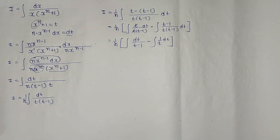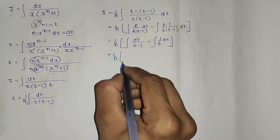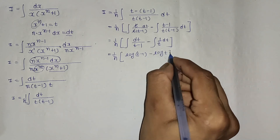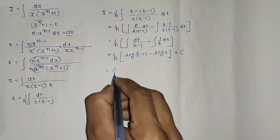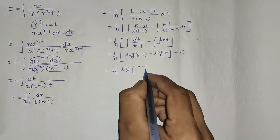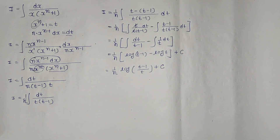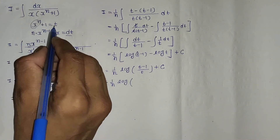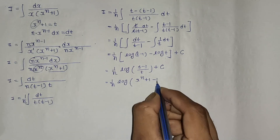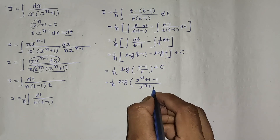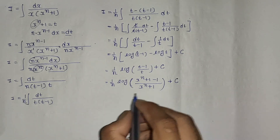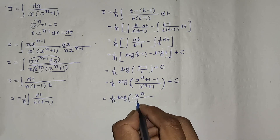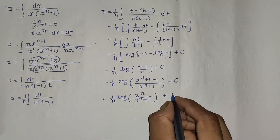Therefore I equals (1/n)·[log|t - 1| - log|t|] + C = (1/n)·log|(t-1)/t| + C. Substituting back t = xⁿ + 1: I equals (1/n)·log|(xⁿ + 1 - 1)/(xⁿ + 1)| + C = (1/n)·log|xⁿ/(xⁿ + 1)| + C. That is our answer.